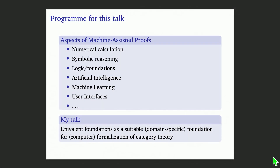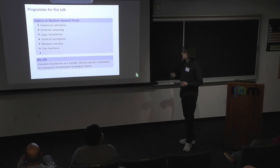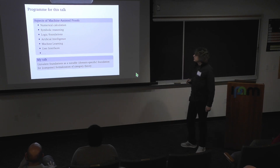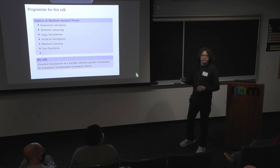In computer proof systems. I want to explain today — it will be a very introductory talk — how univalent foundations are a suitable foundation to formalize category theory and higher category theory. Feel free to interrupt me any time; I really want it to be accessible to everyone, so if something is unclear, it's probably a good idea for you to ask a question.